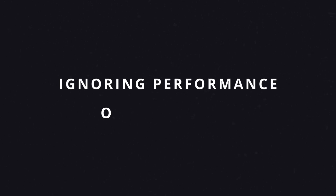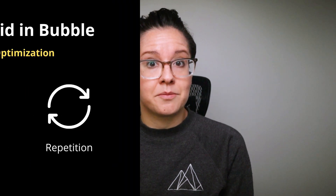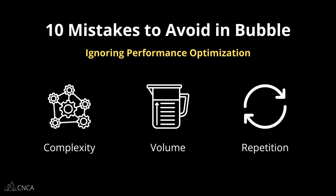The next mistake is ignoring performance optimizations. This is something that's easy to overlook as a beginner, but it's absolutely something you need to be mindful of from the start and all throughout your development. As your app grows, you'll likely experience heavier loads, more users, or heavier activity on a more frequent basis. The last thing you want is for your app to hit a wall — things start to break or features start to slow down and the user experience declines. The best way to guide yourself through optimization is to think about things in terms of complexity, volume, and repetition.